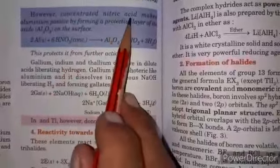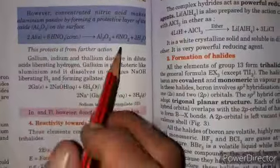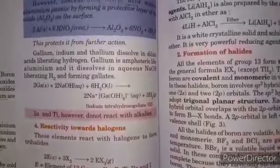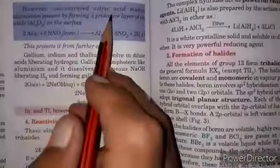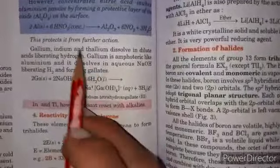When we react aluminum metal with concentrated nitric acid, this nitric acid forms a passive layer of oxide on it so that it does not react with any other reagent. This protecting layer formed by concentrated nitric acid on aluminum is oxide.